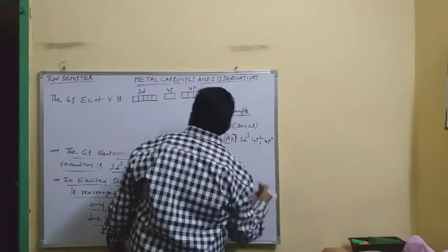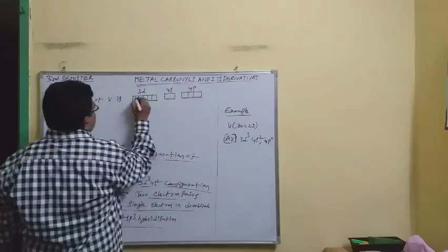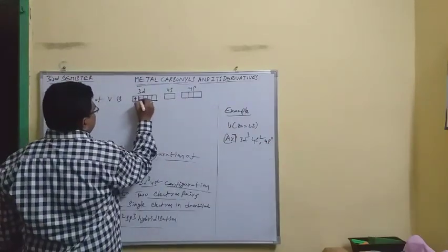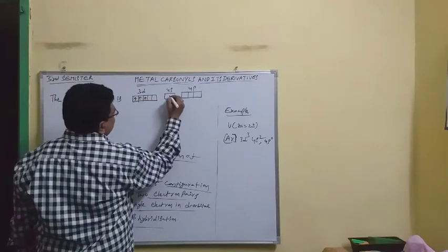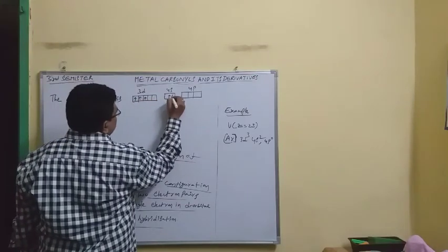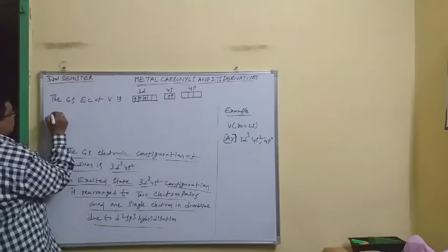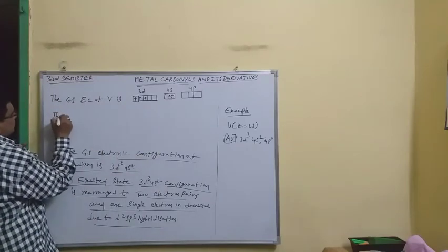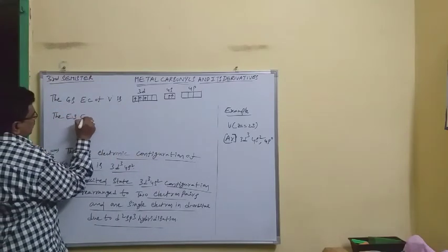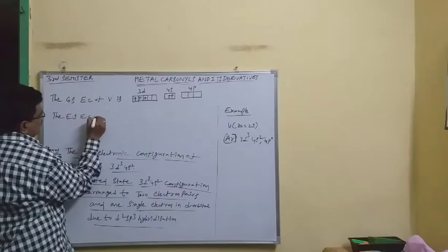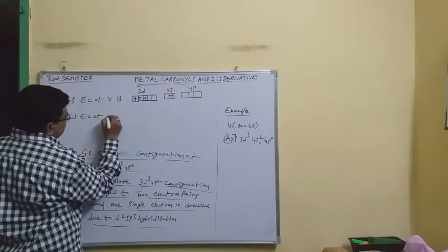The excited state electronic configuration of vanadium is now considered, with five orbitals involved: 1, 2, 3, 4, 5 — giving five orbitals total in the excited state.